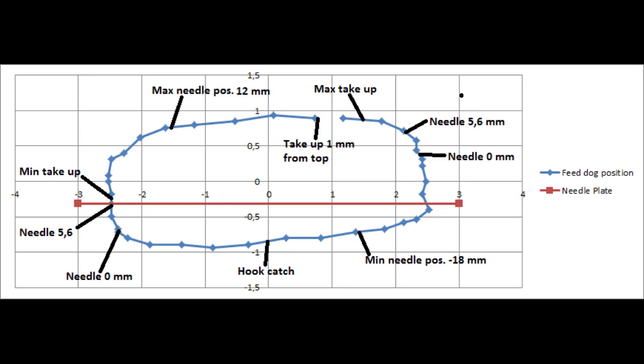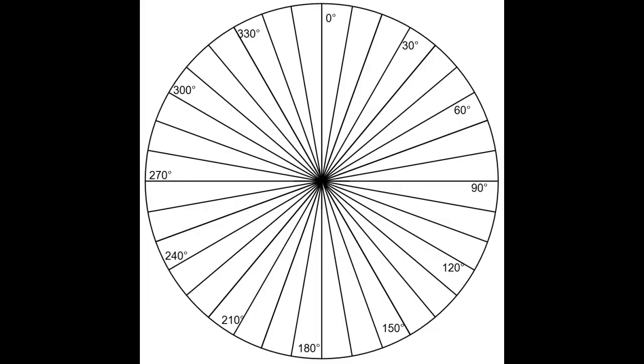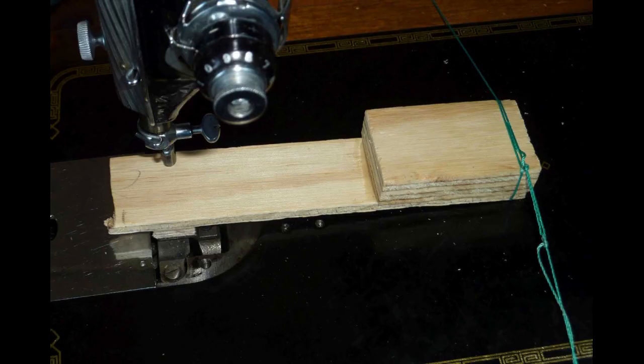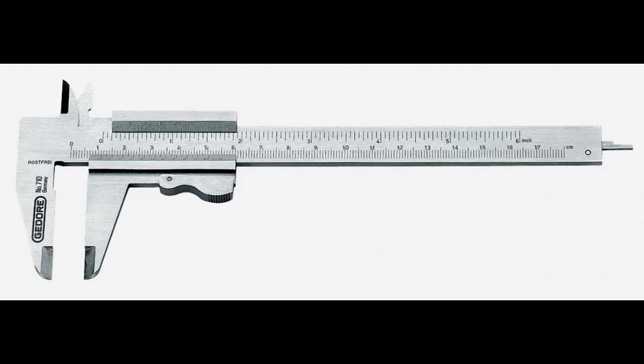I will just make a note on how I measured this. I used this protractor printed on a piece of paper and I glued that temporarily to the hand wheel, so I could measure the angle of the hand wheel. And then I put on this piece of wood onto the feed dogs. And in this way I could measure the height of the feed dog. And for that I used this vernier caliper.